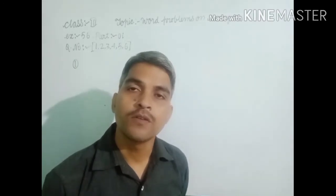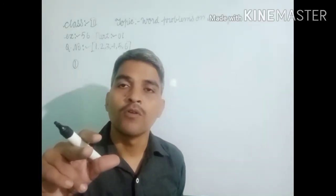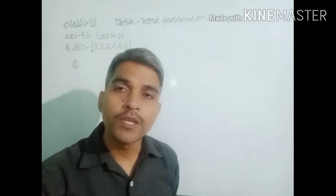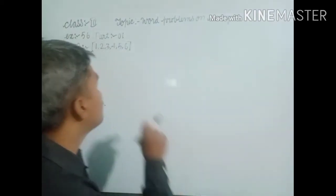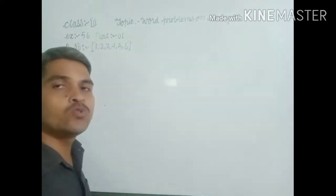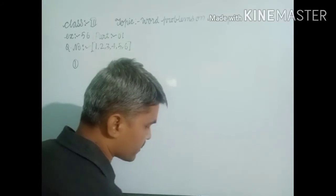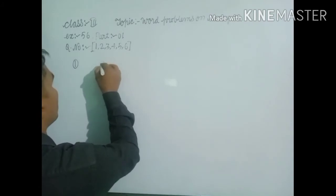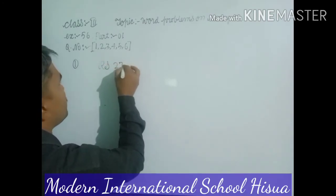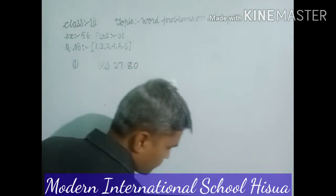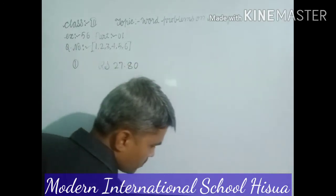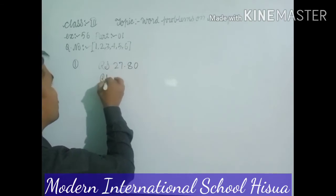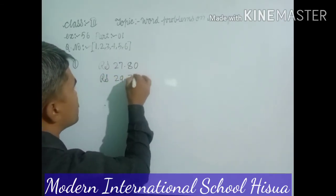In questions, Joginder buying for his sons and daughters firecrackers. How much did he give for buying firecrackers? Dear students, when you add, then you find out Joginder's total investment for firecrackers. So, you write here, Rs. 27.80 and for his daughter, Rs. 29.75.